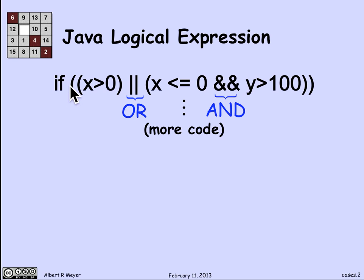So this is a conditional test, an if test, that is the guard on a bunch of code to be executed if this test comes out to be true. Let's read the test. If x is greater than 0 or if x is less than or equal to 0 and y is greater than 100, go ahead and do the code that's in there indicated by the vertical dots.